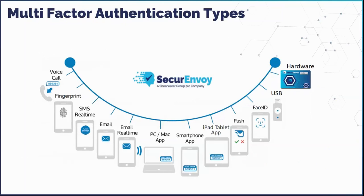Secure Envoy has a broad portfolio of authenticators, providing users with choice — both from a security standpoint and for user acceptance. For example, we're working with an energy company that wants to use a voice call because the landline number is already in their database, proving it's registered at a home address. Having a broad range of options allows greater flexibility for the right tactic in the right solution.